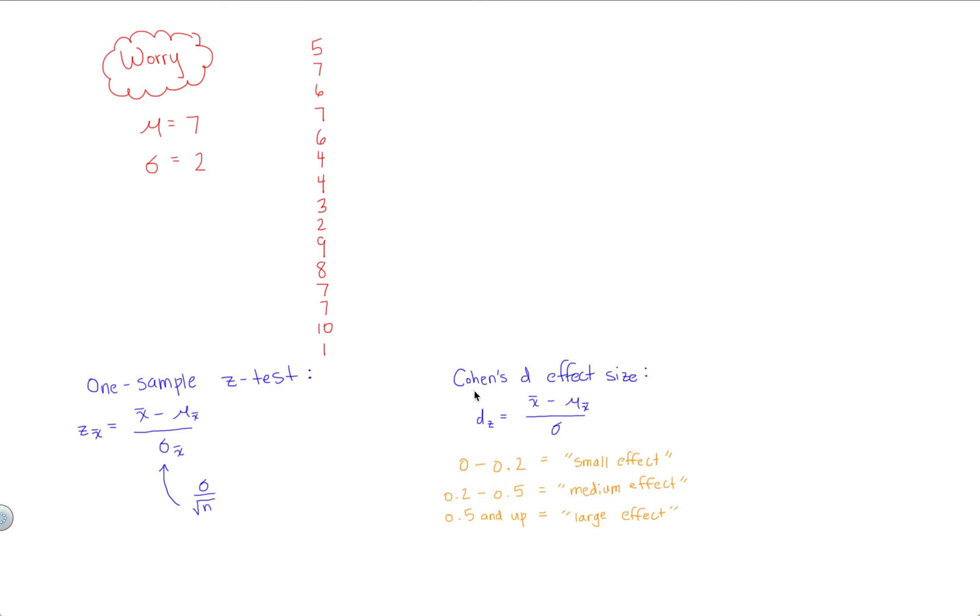For now, I'll just mention that we typically measure effect sizes using Cohen's d. There are other ways of measuring effect sizes out there, but this is the standard and the most common. So we have d sub z. Notice that the subscript represents basically what test this effect size is associated for, because every single hypothesis test out there will have its own effect size.